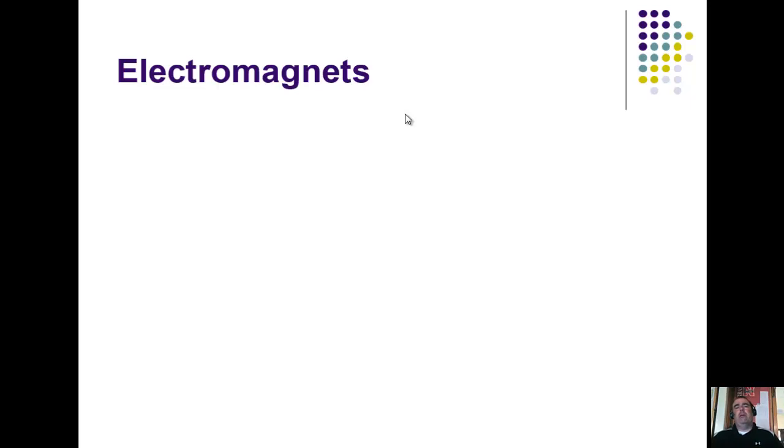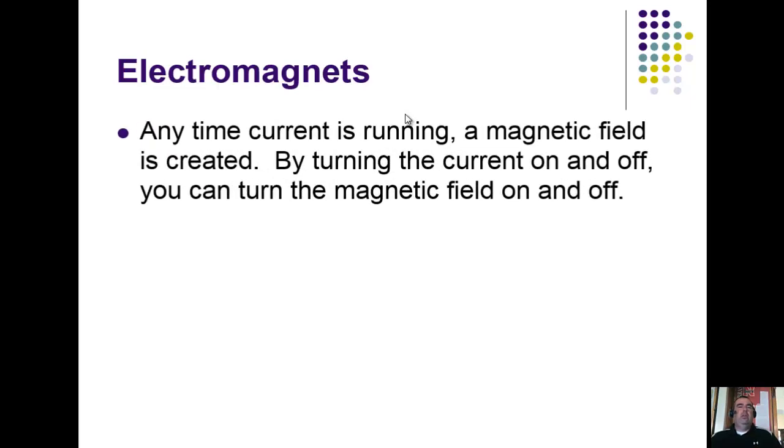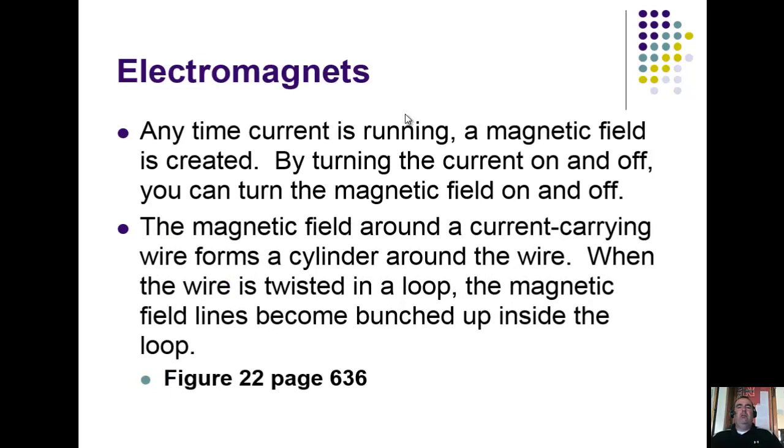The last thing we want to talk about is electromagnets. We've already identified it as some sort of magnet that operates off of electricity. Anytime current is running, a magnetic field is created, and we already discussed and showed that to you looking at those magnetic field lines through that picture shown earlier. By turning the current on and off, we can turn that magnetic field on and off. The magnetic field around a current carrying wire forms a cylinder around that wire. When the wire is twisted into a loop, the magnetic field lines get bunched up, causing that magnetic field to be stronger.